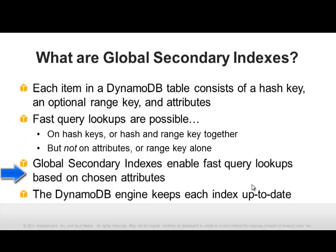When you define a global secondary index, you cause the DynamoDB engine to maintain an index based on an attribute that is not a key in the main table. The hash key from the main table is always projected into the index, and you can choose to project other item attributes as well. The attribute you choose as a global secondary index key need not even be present in every table item. DynamoDB will keep the index up to date; whenever the main table changes, the index is automatically modified to reflect it.